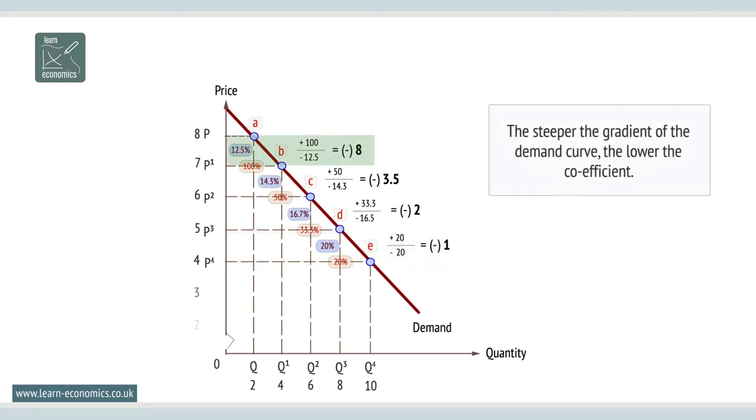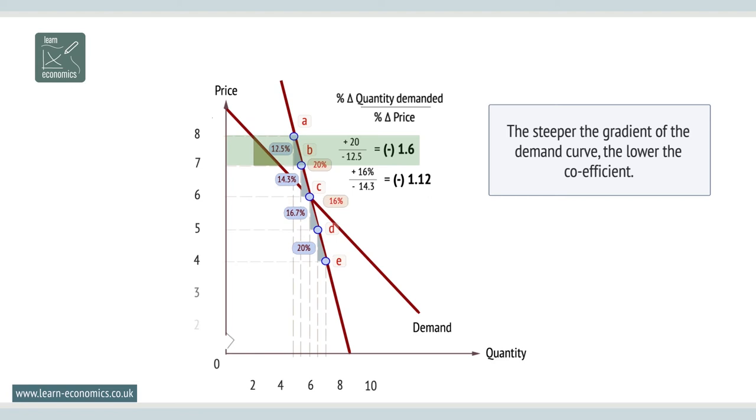Steeper the gradient of the demand curve, the lower the coefficient. Over the price range 8 to 7, PED is minus 1.6. This is still greater than minus 1, and elastic, but it is much less elastic compared to the flatter gradient.